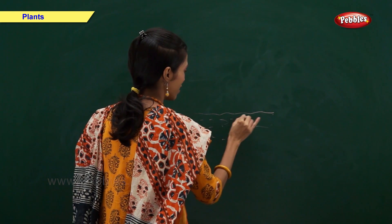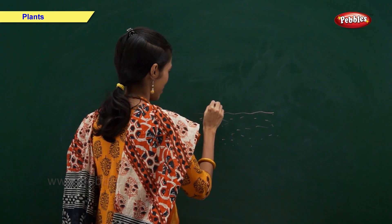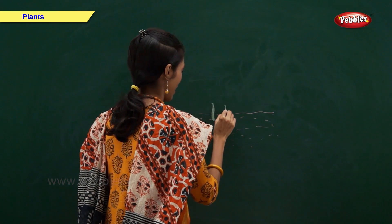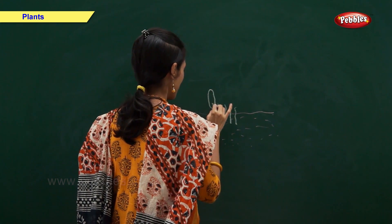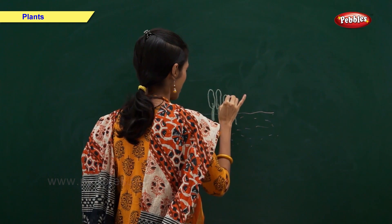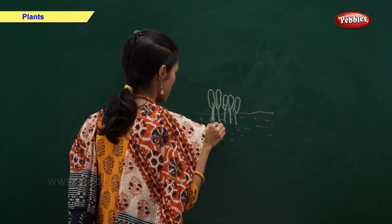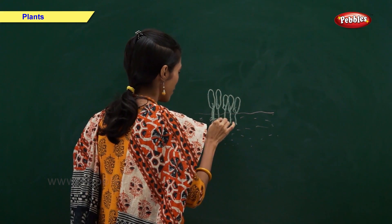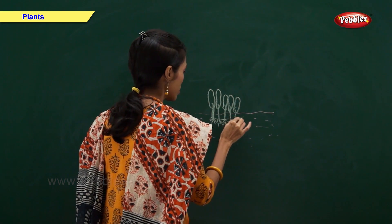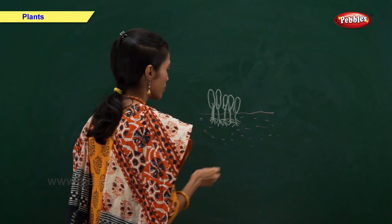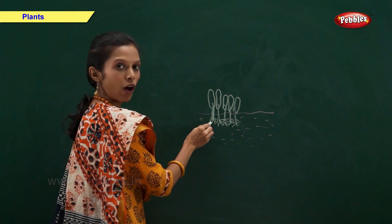Now let us draw an example of herbs. This is soil, where very small plants like herbs grow. An example is spinach. This is the stem. So, spinach is an example of herbs and these are roots. Spinach has leaves, stem and roots. Now let us label them.